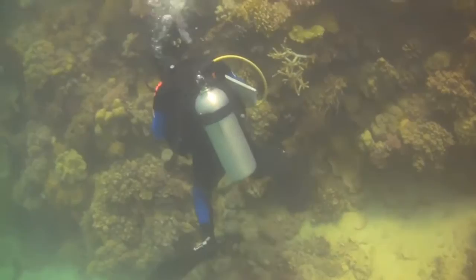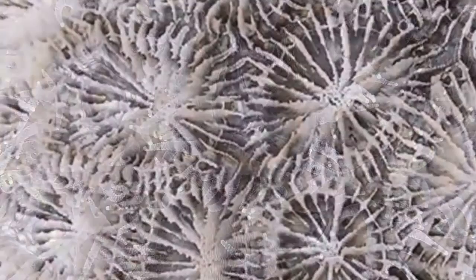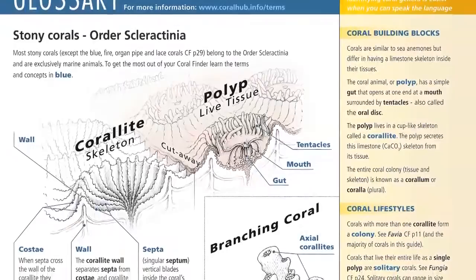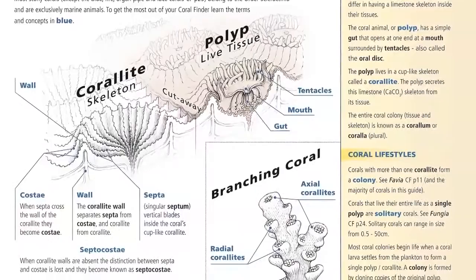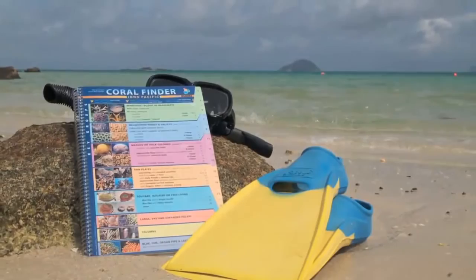Welcome to the fourth training movie in the Coral Finder Toolkit training movie series. In the previous movie we met the coral animal and its skeleton and were introduced to the simplified set of terms used by the Coral Finder to separate coral genera. If you skipped that, you will have to go back eventually.